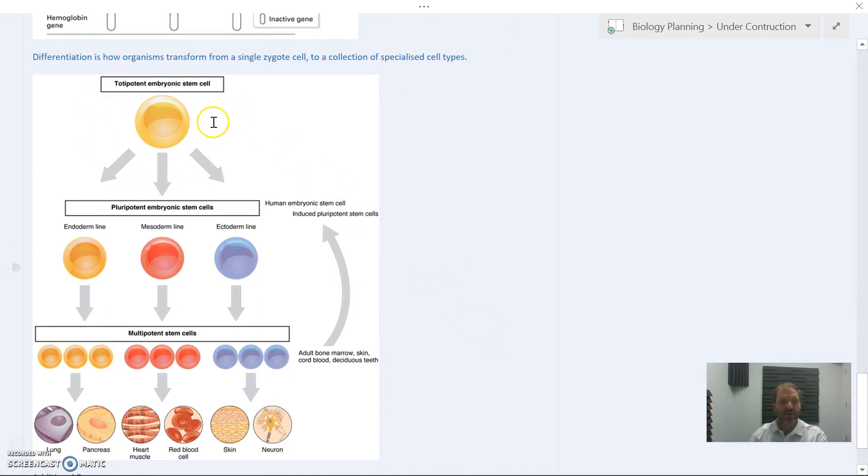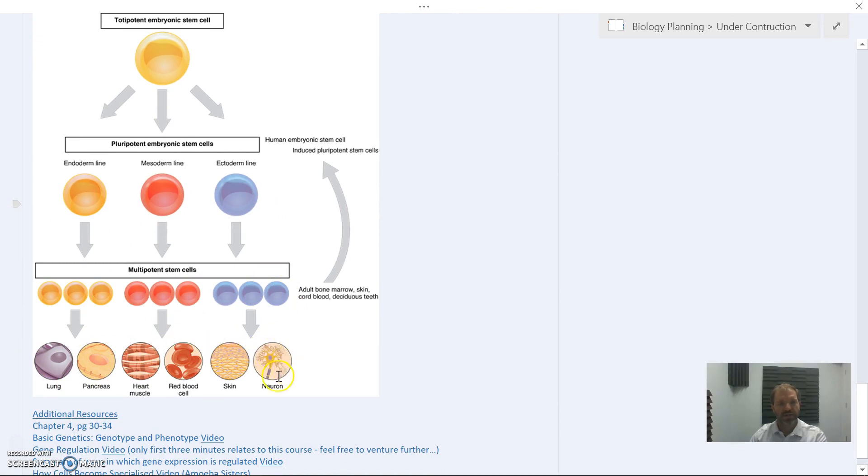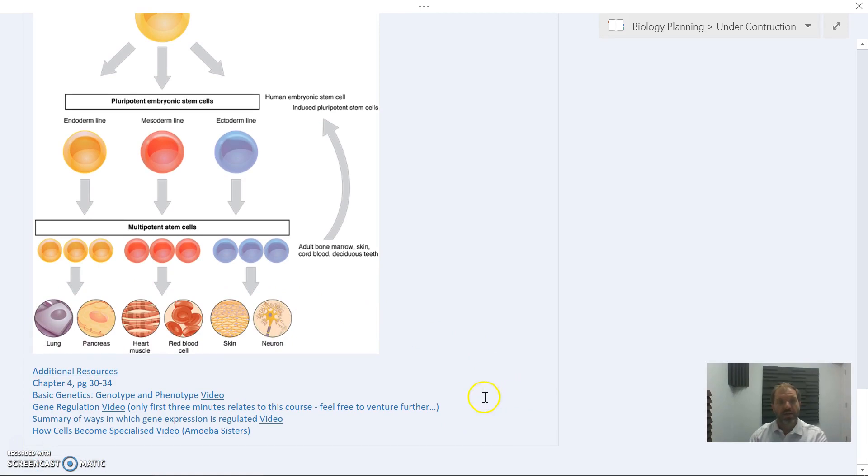This is a really important part of development and differentiation. We all start as a totipotent embryonic stem cell. A zygote can become any type of cell. These differentiate into particular cell lines that can differentiate further and specialize to become all the different cell types in the body. Key takeaway: environmental factors and other conditions within the body determine which genes are turned on and off, changing cell structure and function, leading to differentiation and the phenotype of the organism.